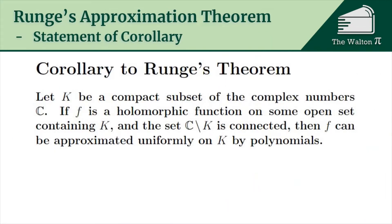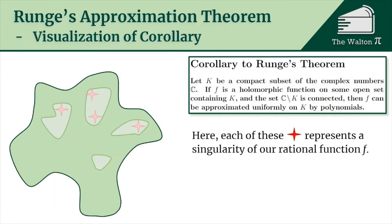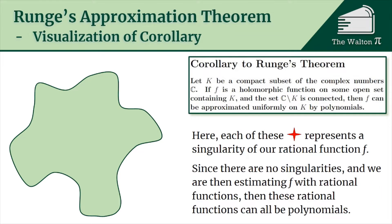There is an additional corollary: if the complement of K is a connected set, then f can be approximated uniformly by polynomials. If the complement is connected, there are no interior bounded pieces, so we only have the exterior of K. Since K is compact it is bounded, meaning the complement is always unbounded, so all singularities vanish. We can pick A to be the empty set, and approximate using polynomials — which are rational functions without any singularities.